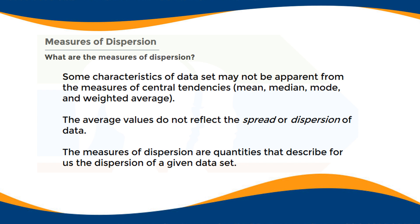Some characteristics of a data set may not be apparent from the measures of central tendency. The central tendencies are the mean, median, mode, and weighted average. The average values do not reflect the spread or dispersion of data. The measures of dispersion are quantities that describe the dispersion of a given data set.